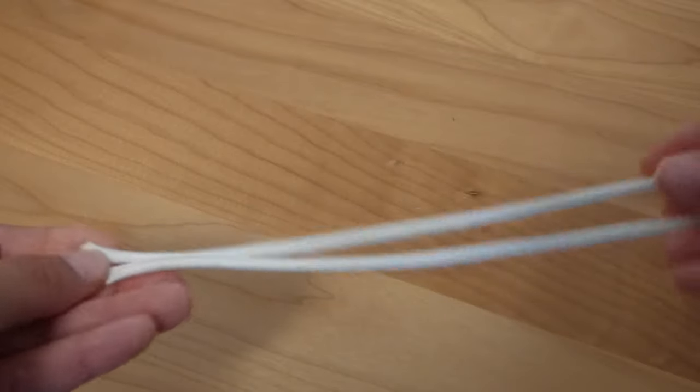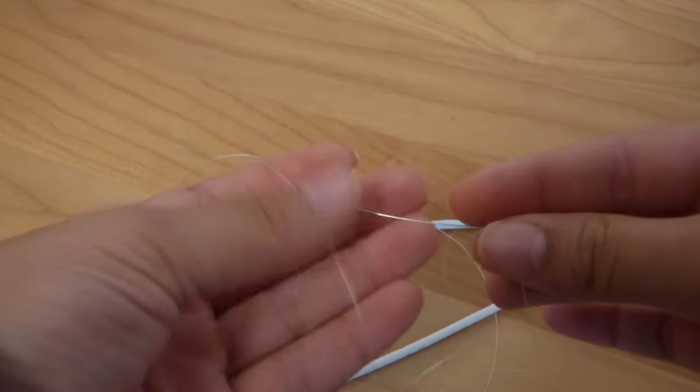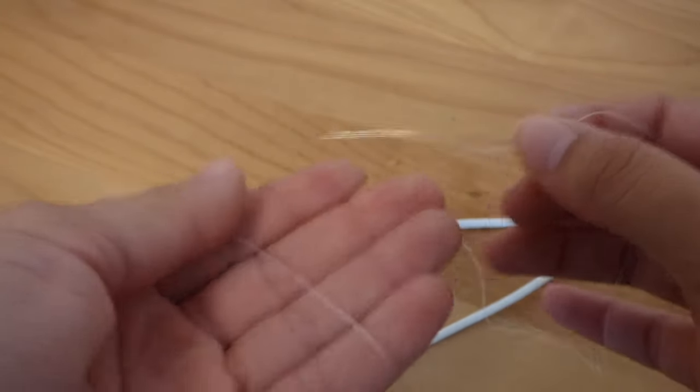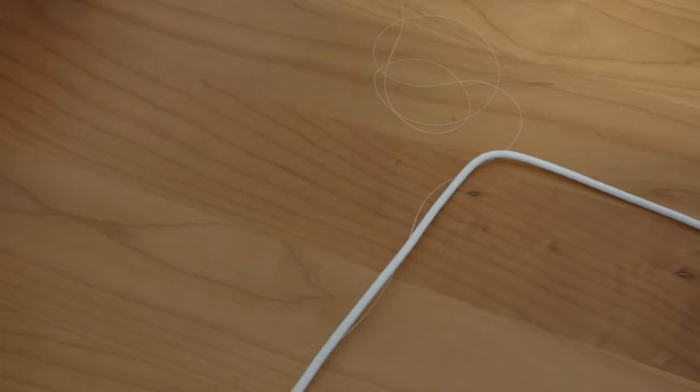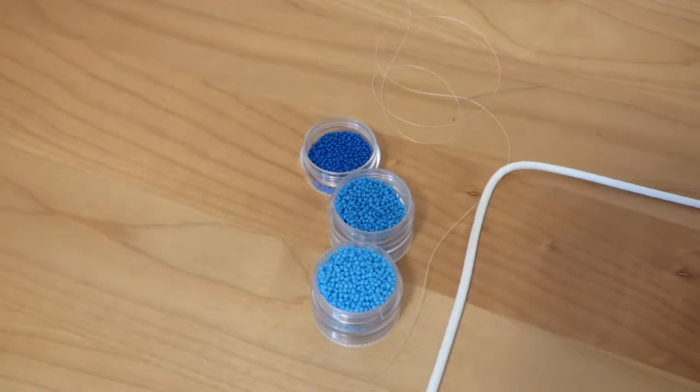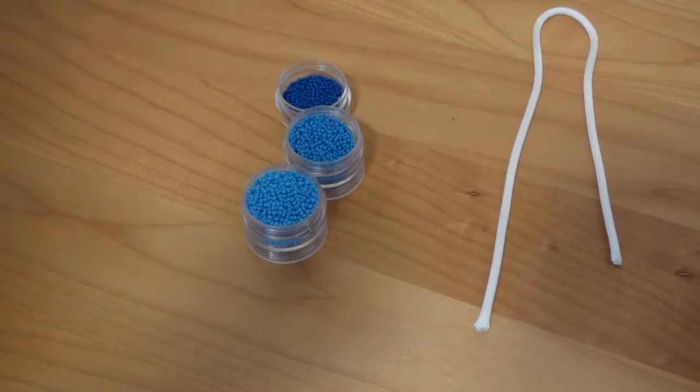You're also going to need some needle and thread. I use size D Nymo, and this is a size 12 needle. And then the last thing you're going to need is just regular seed beads. Mine are size 11 seed beads, and today I'm just going to be using a couple of different types of blue.